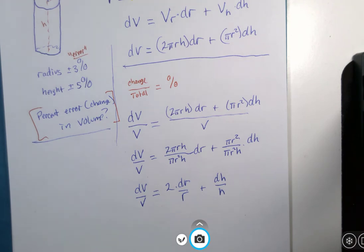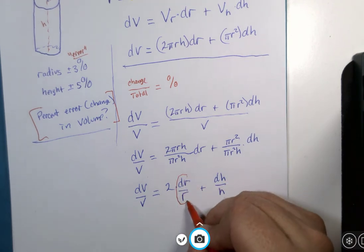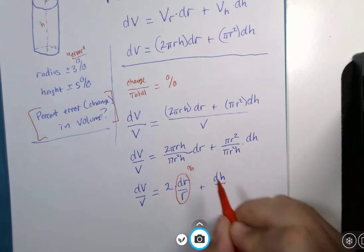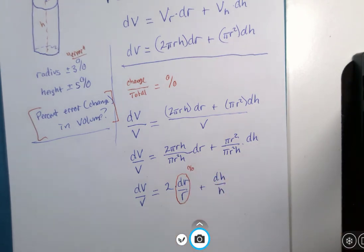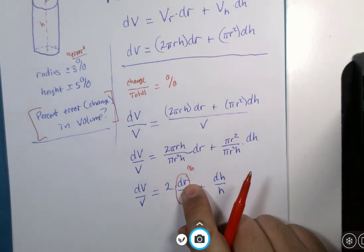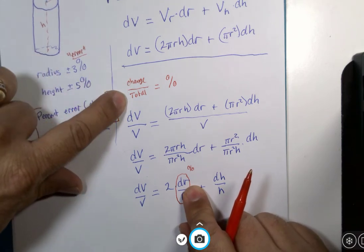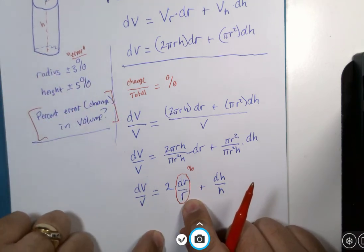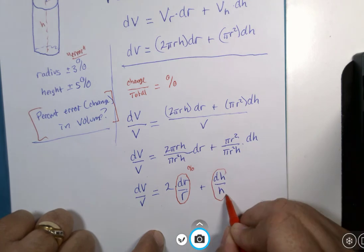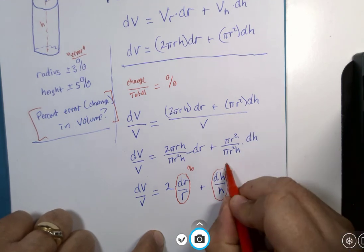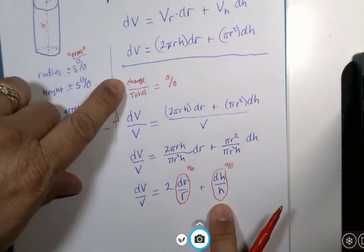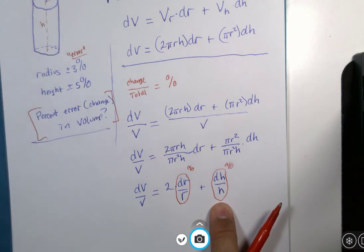Now, this here is a percentage. It's the amount of change over the total for the radius. And this here is a percentage. It's the amount of change divided by the total for the height.